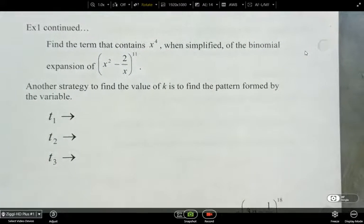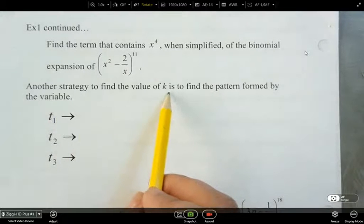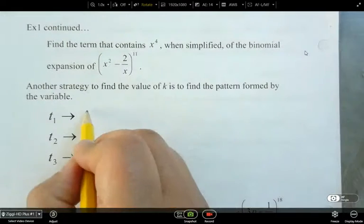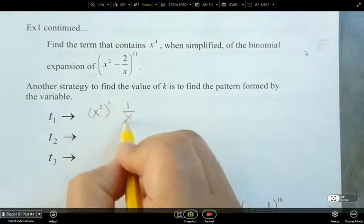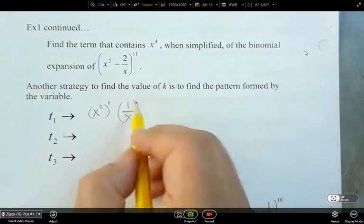If we are continuing this, find the term that contains x to the power of 4 when simplified of the binomial expansion of x squared minus 2 over x all to the power of 11. So another strategy to do this would be to find the value of k, is to find the pattern formed by the variable. So what is the actual pattern when we're looking at our terms? If we have x to the power of 2 for the first term, we're going to have 11 as our first power here, right? And then 1 over x. Now I'm just caring about the x's. So I'm ignoring the negative 2 that was in the numerator.